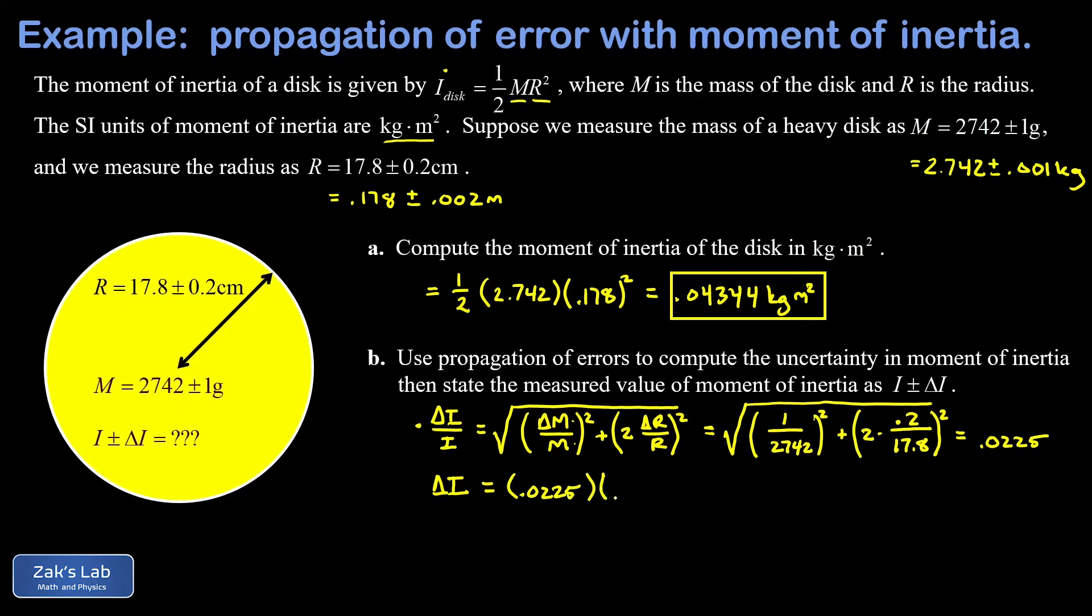That's 0.04344—that has a lot of extra precision in it—and when we run the numbers on this we get 0.000977. Now my usual convention is to round the actual uncertainty to one significant digit.